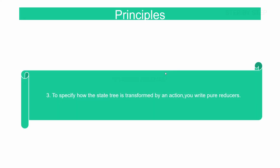The third principle is: to specify how the state tree is transformed by an action, we write pure reducers. There will be only one single store inside Redux, and the store will be storing the state of the application. An action is an object with a type property. As soon as I dispatch an action, it sends the action to the reducer, and accordingly the reducer will update the state.